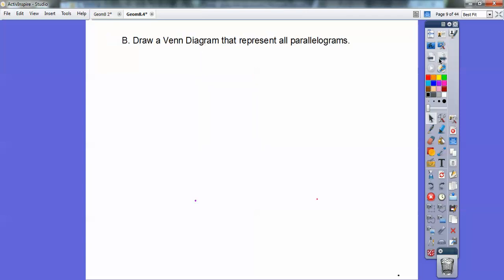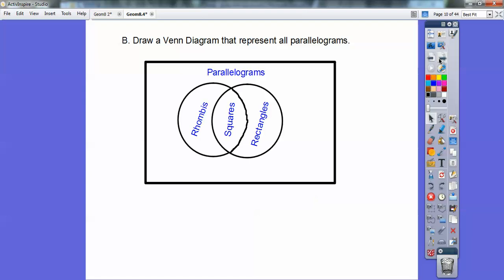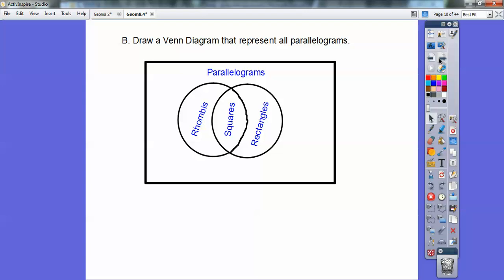Okay, so draw a Venn diagram that represents all this stuff. Alright, well there it is right there. You've got your parallelograms, covers everything and under the parallelograms you have rhombus in one. You have rectangles in another and where they overlap is your squares.